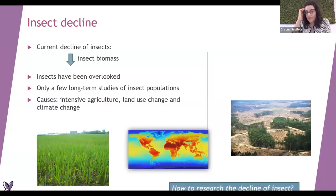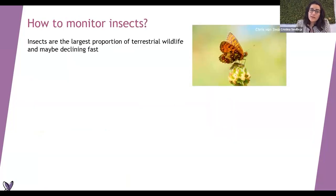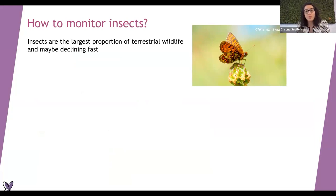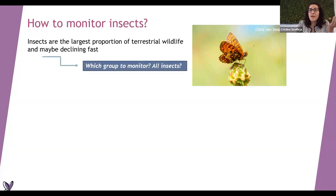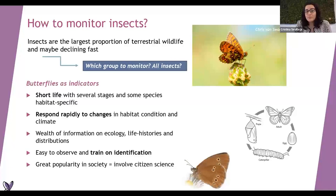But how can we research the decline of insects - where can we start? We could monitor insects, but these are the largest proportion of animals on land, so it's quite complicated to monitor all insects. There are many thousands of species. We need to select some kind of bio-indicators, like an umbrella group, to understand what is going on with insects. For that, we use butterflies as an indicator, because they have really good qualities for this purpose - to know how other terrestrial insects are doing.